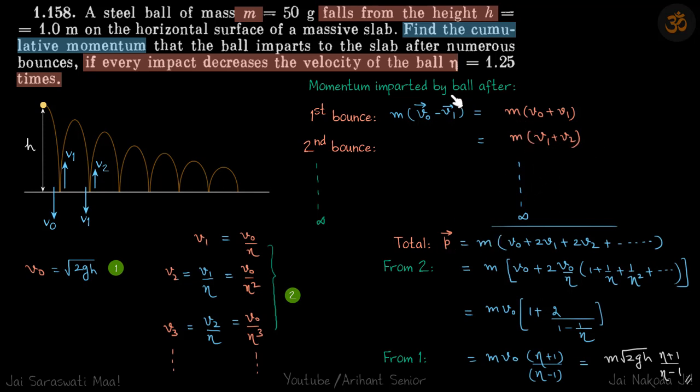So total momentum we will just add for all the bounces. It will come to be m into v0 plus 2v1 plus 2v2 plus 2v3 and so on.